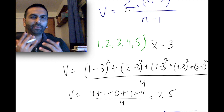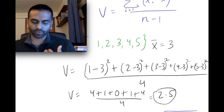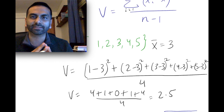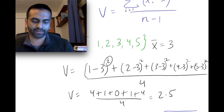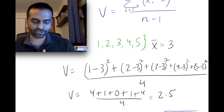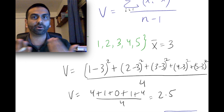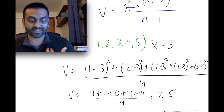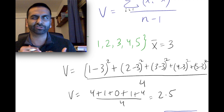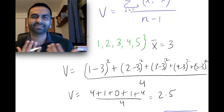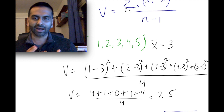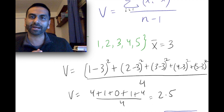How do we interpret 2.5? Actually, there's no practical interpretation because of the squaring — the squaring makes the units problematic. If this was income measured in dollars, the units of variance would be dollars squared, which has no practical meaning. So 2.5 dollars squared doesn't really have a useful interpretation.